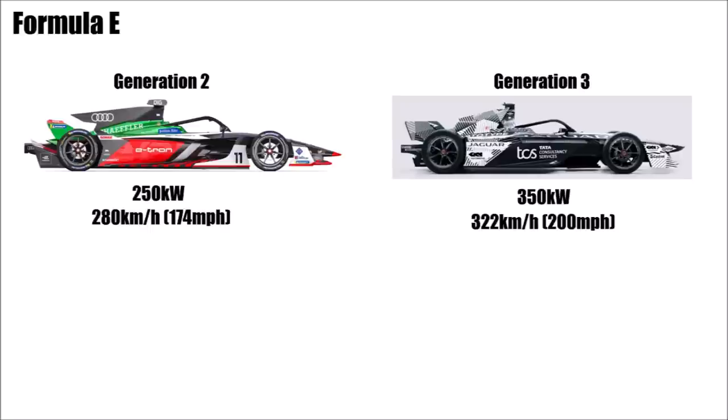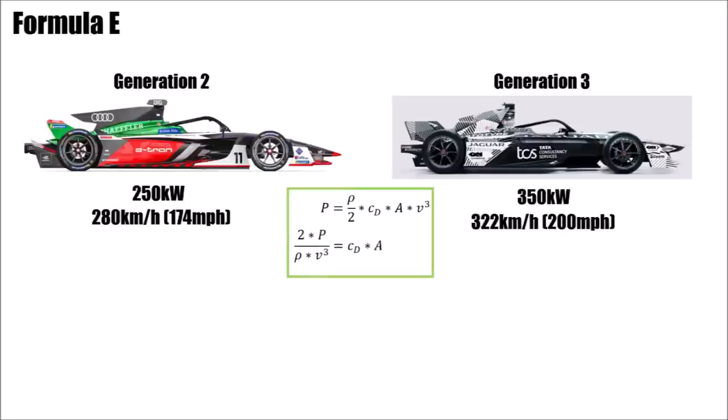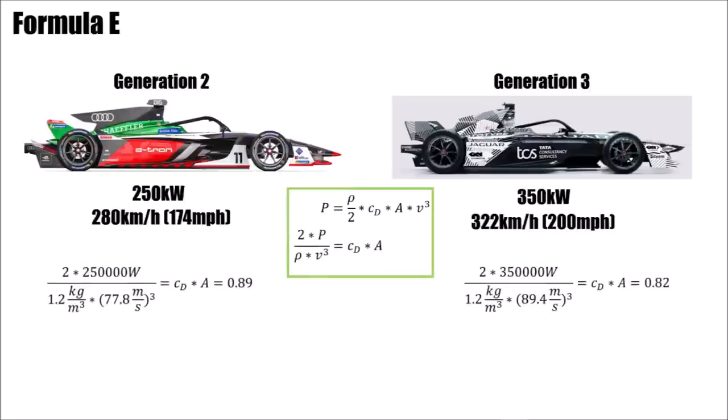So let's see how the drag of the car changed. The formula is: power equals air density divided by 2, times the drag coefficient and frontal area, times velocity to the power of 3. Rearranging to calculate the product of CD and A, we get 0.89 for Generation 2 and 0.82 for Generation 3. If we assume that the frontal area is around 1.5 square metres for Generation 2, that means the drag coefficient would be a little below 0.6, which is a reasonable number for a formula car with low downforce.